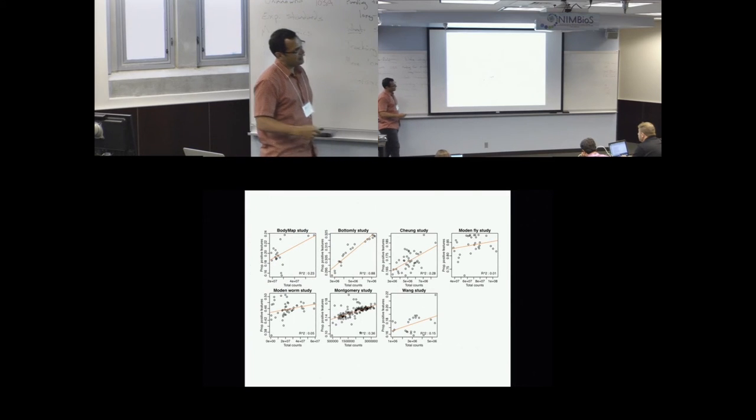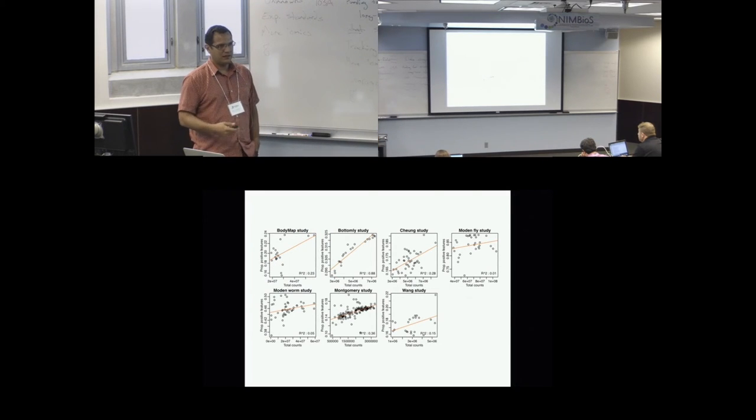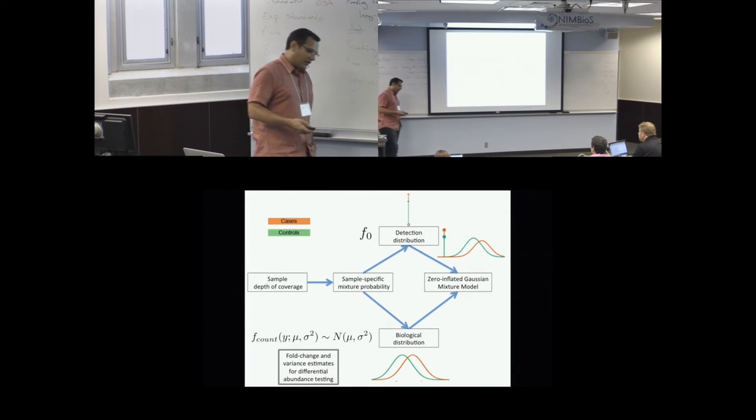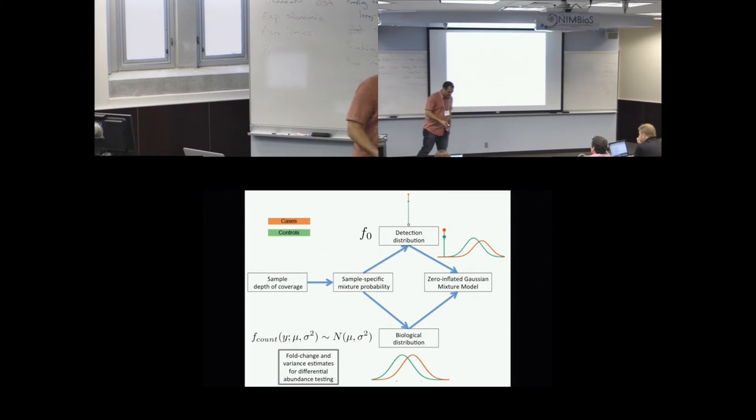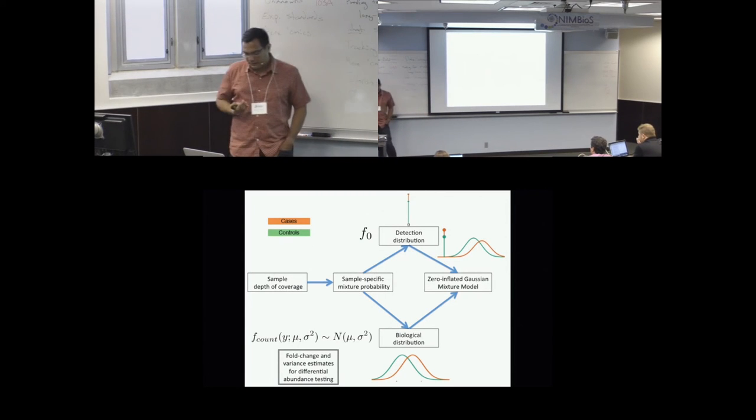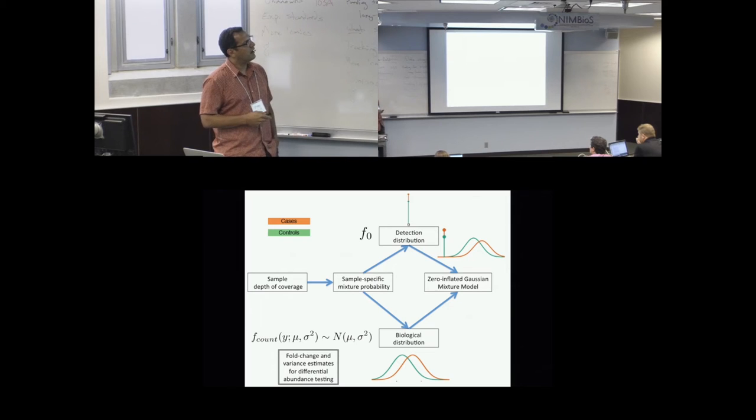And why did we want to address this? If I make the same plot for RNA-seq studies, we don't see the same strong trend. So we decided to try to address this, and the way we address this is this question of how can I model the behavior of presence-absence as a function of depth of coverage? And how do I then correct our distribution of counts to address that?